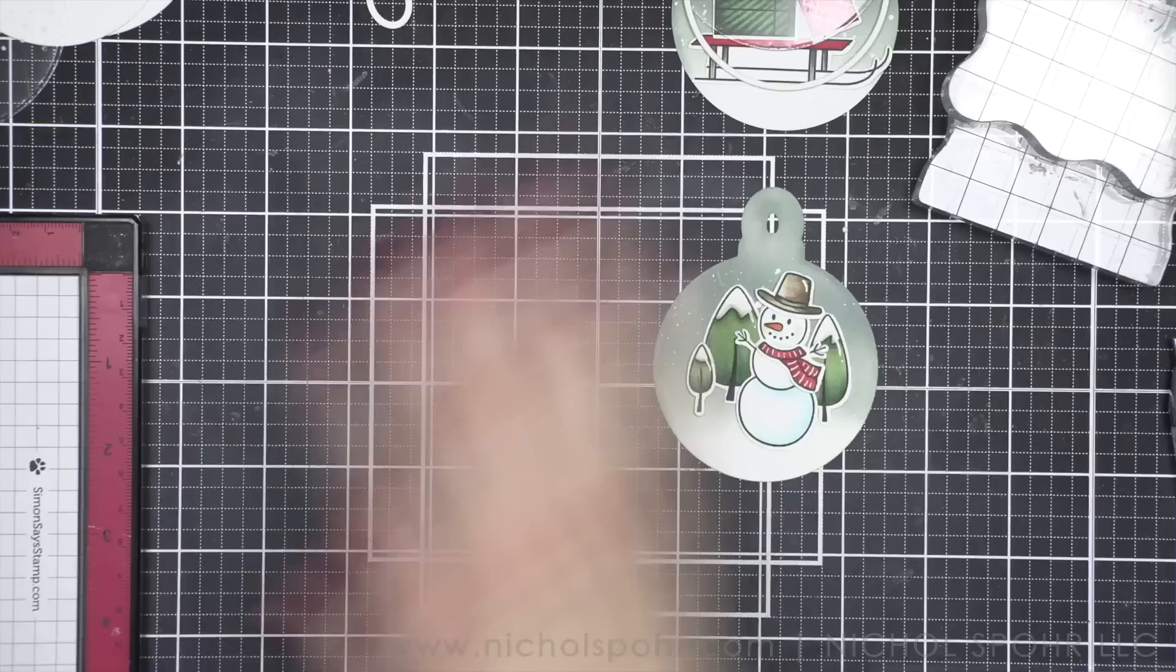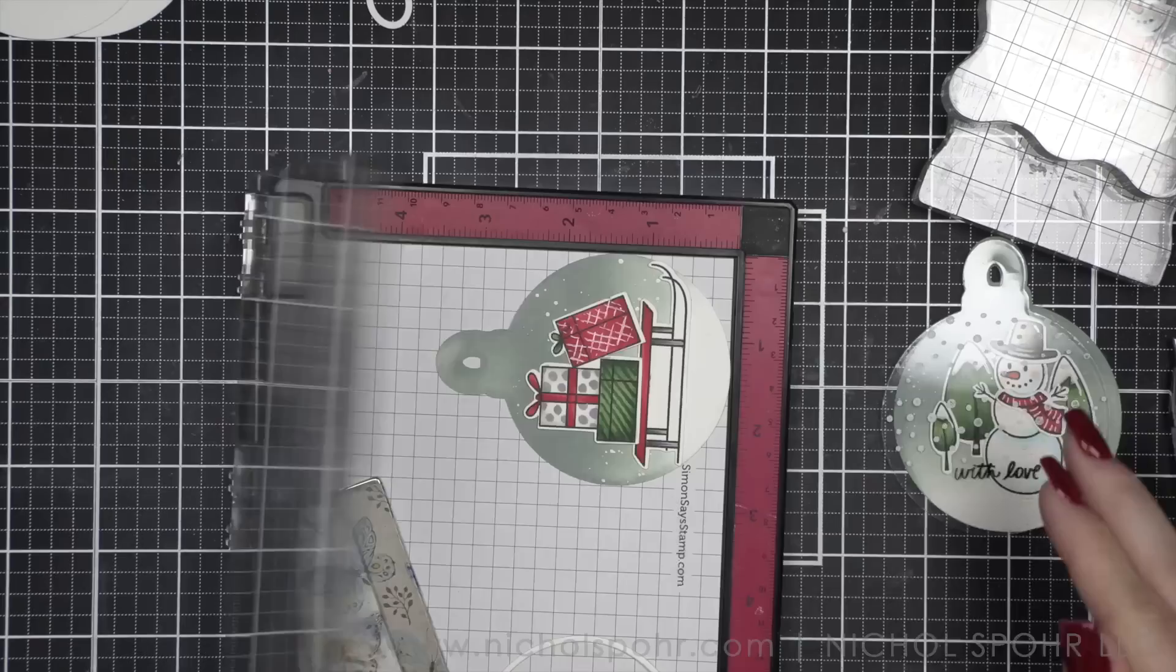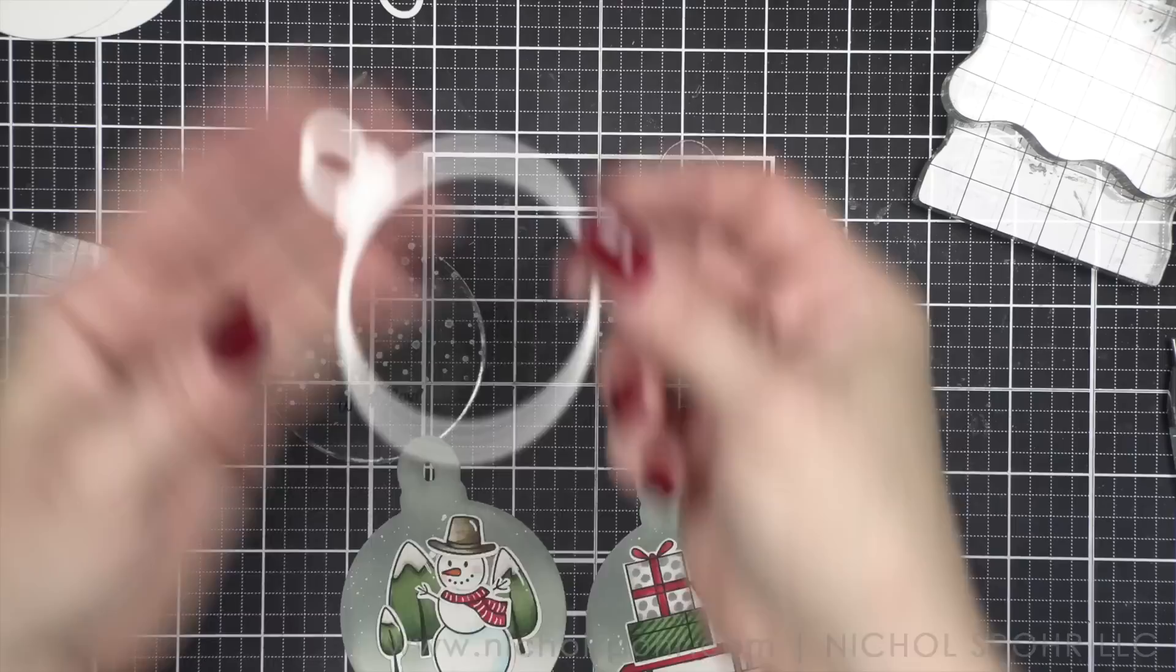Now that I know that I like this design, I'm going to go ahead and start stamping With Love on the other two acetate covers, and it ended up being in the perfect spot for all three. I stamped all three with the black Stazon ink, cleaned it up, and put it away.